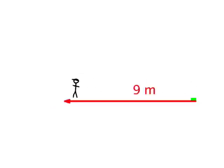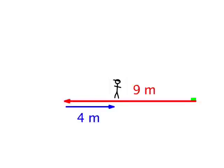Here a man walks nine meters left, then four meters right. His resultant displacement is five meters left of where he started.